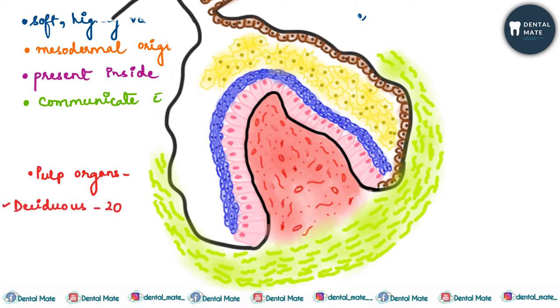If we talk about pulp organs, in humans, 20 are present in deciduous teeth whereas 32 are present in permanent teeth, giving a total of 52 pulp organs in humans.